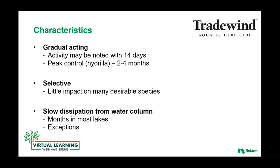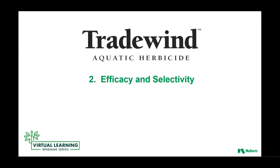The neat thing has been the consistency of results and the selectivity, which really starts to separate Tradewind as an ALS inhibitor from other products on the marketplace. That selectivity, combined with the slow dissipation in the water column — some plants have the ability to metabolize it and some don't. If there's slow dissipation, one might assume more broad-spectrum impact on non-target species, but the selectivity of the chemistry prevents that, which we'll touch on throughout the presentation.